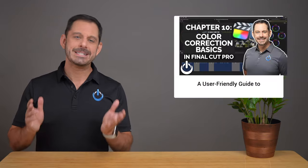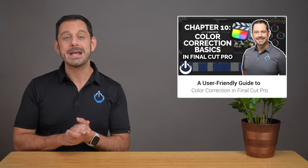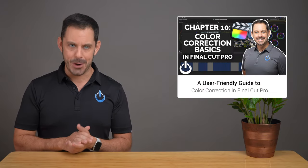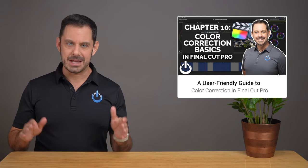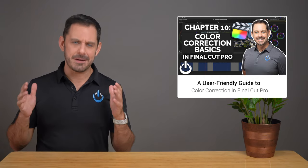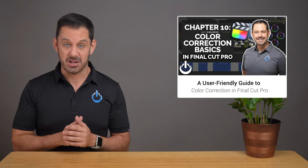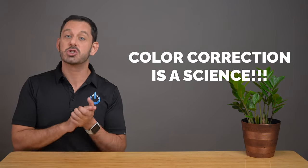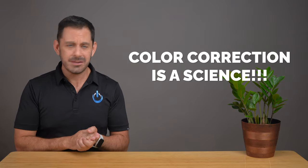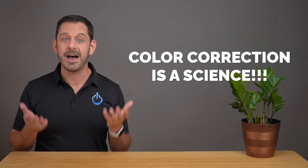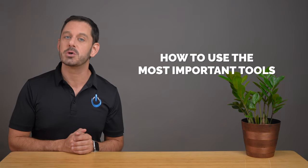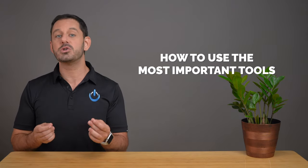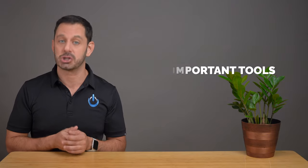Let's begin the class. Today I'm going to teach you how to perform a basic color correction in Final Cut Pro. Of all the different chapters that I've created for this course, this is by far one of the most difficult topics to cover. What you have to understand about color correction is it truly is a science — that's why there are people who are full-time colorists. So what I'm going to do is teach you how to use the most important tools that will help you achieve a more professional and polished look.